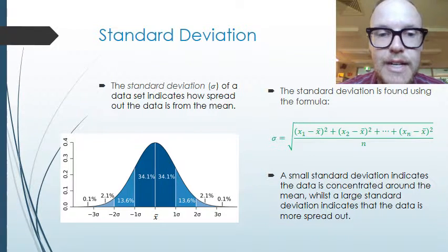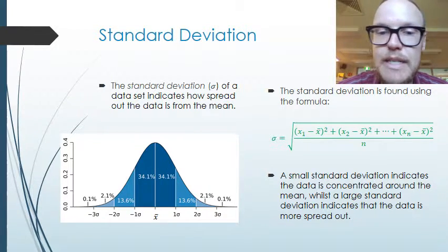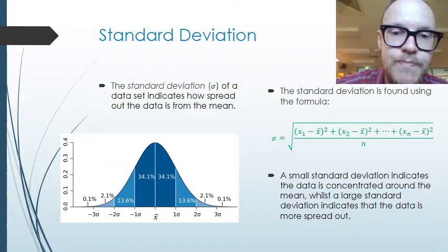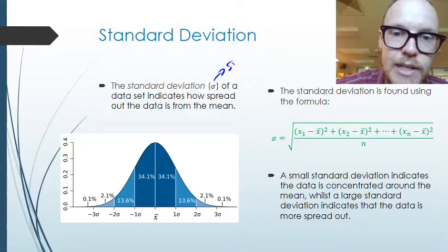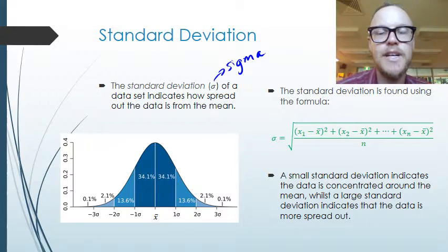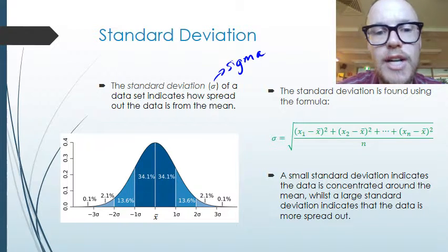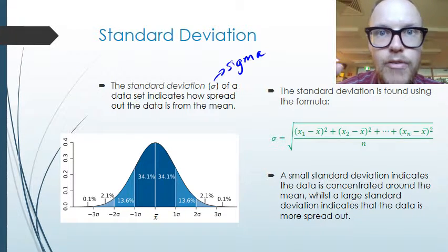Standard deviation is given the symbol sigma — this is sigma, it's a Greek letter — and it defines just how far the data spreads from the mean.